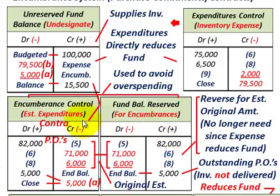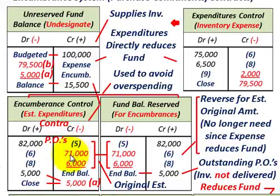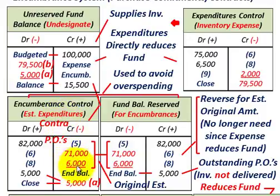We've set up our encumbrances control account against our unreserved fund balance, and we've also set up the fund balance reserved for these encumbrances. When you actually get billed and receive the materials — in this case those expense supply items — you credit or reduce your encumbrances control account for the original estimated amount, and you also reduce the fund balance reserved by those amounts.